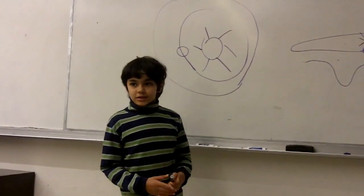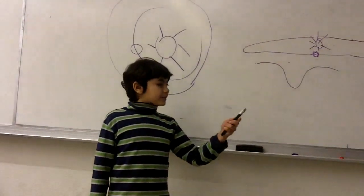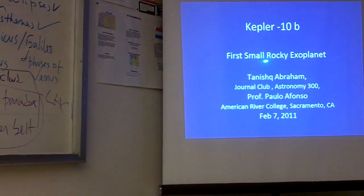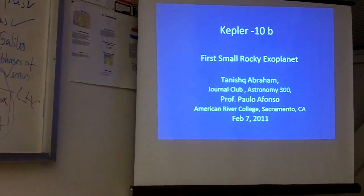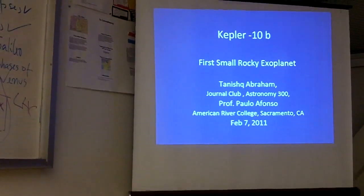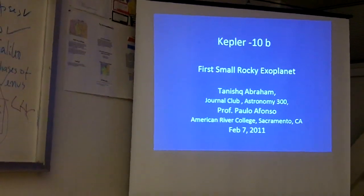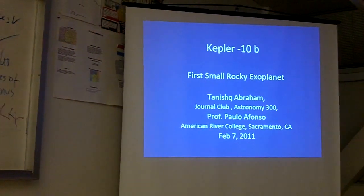So today I'm going to talk about Kepler-10b, which is the first small rocky planet — the first confirmed, or essentially confirmed, rocky exoplanet.